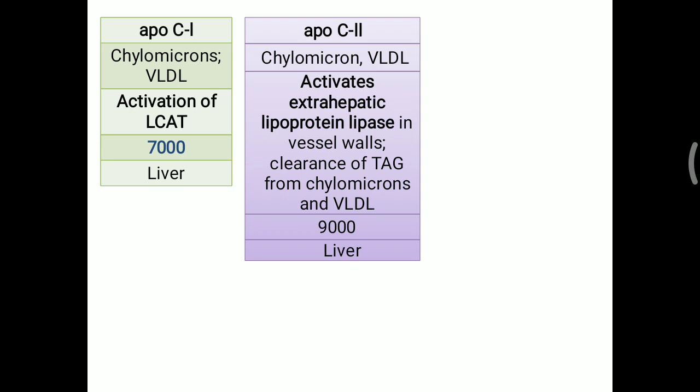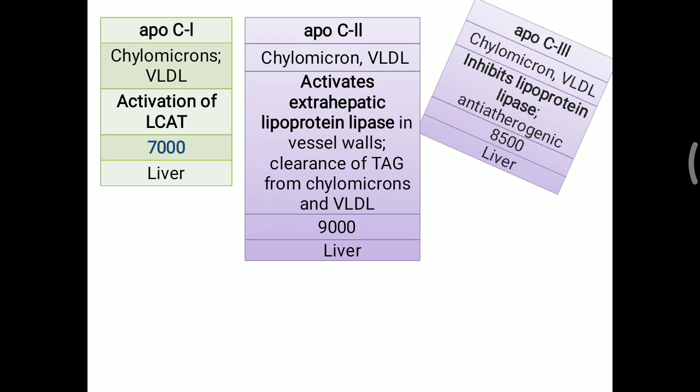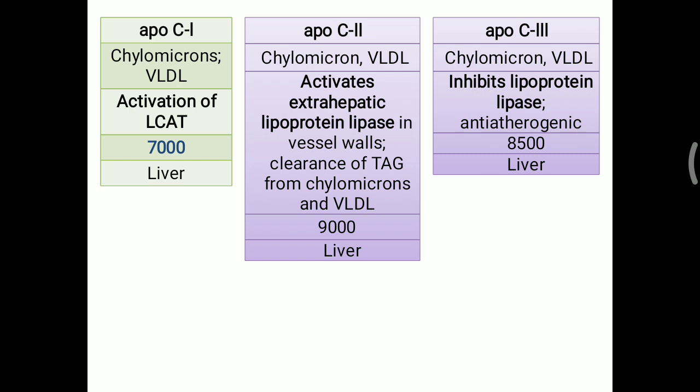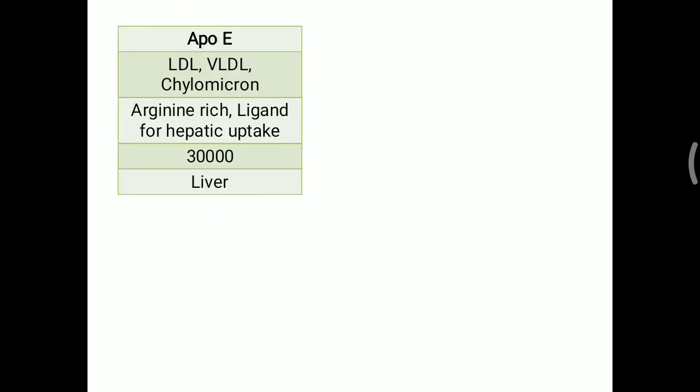Apo C3 is also found on chylomicrons and VLDL. Opposite to Apo C2, it inhibits lipoprotein lipase, making it pro-atherogenic in nature.